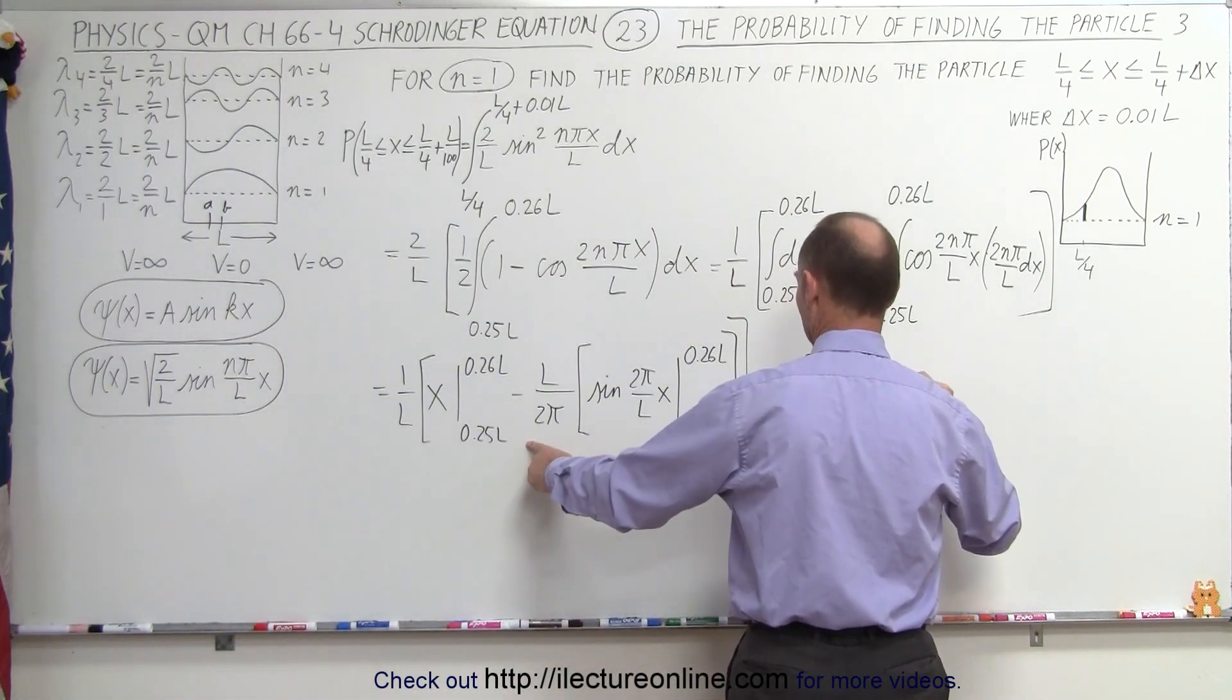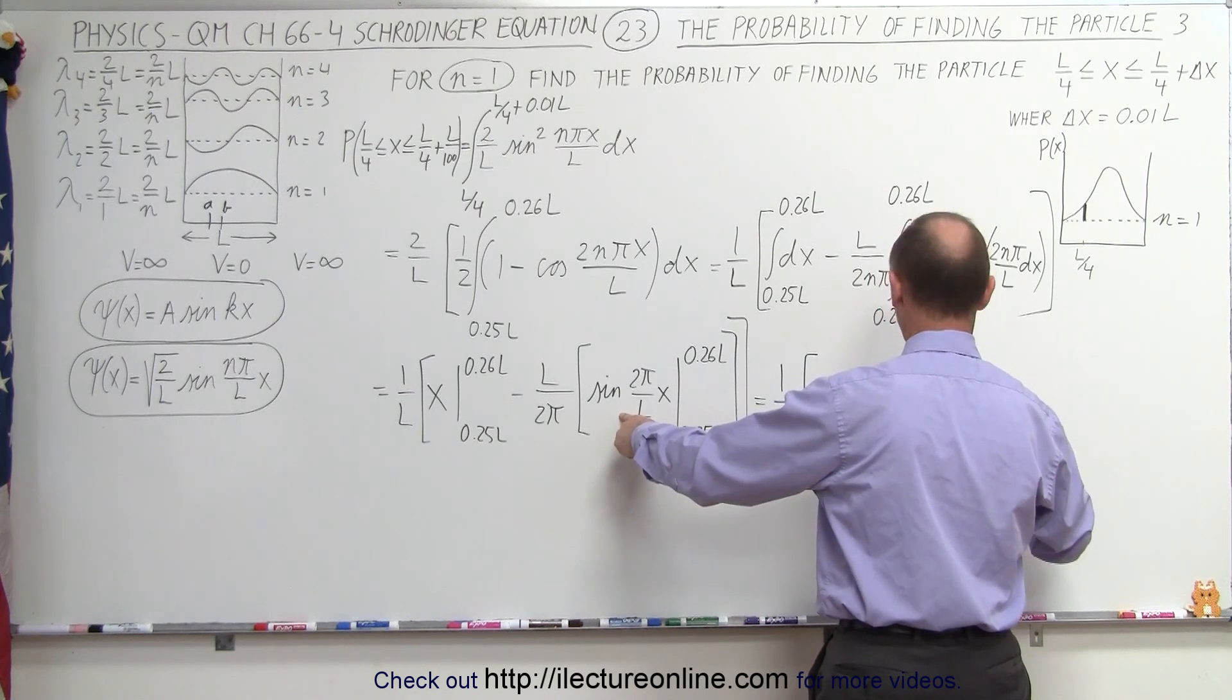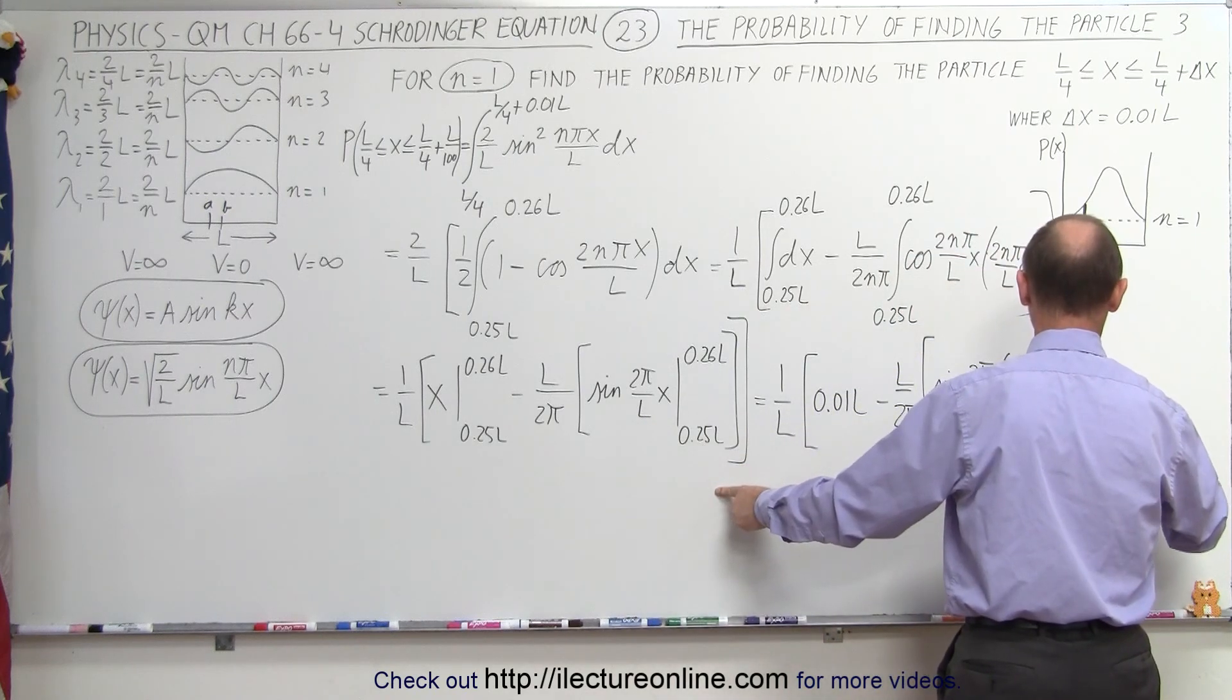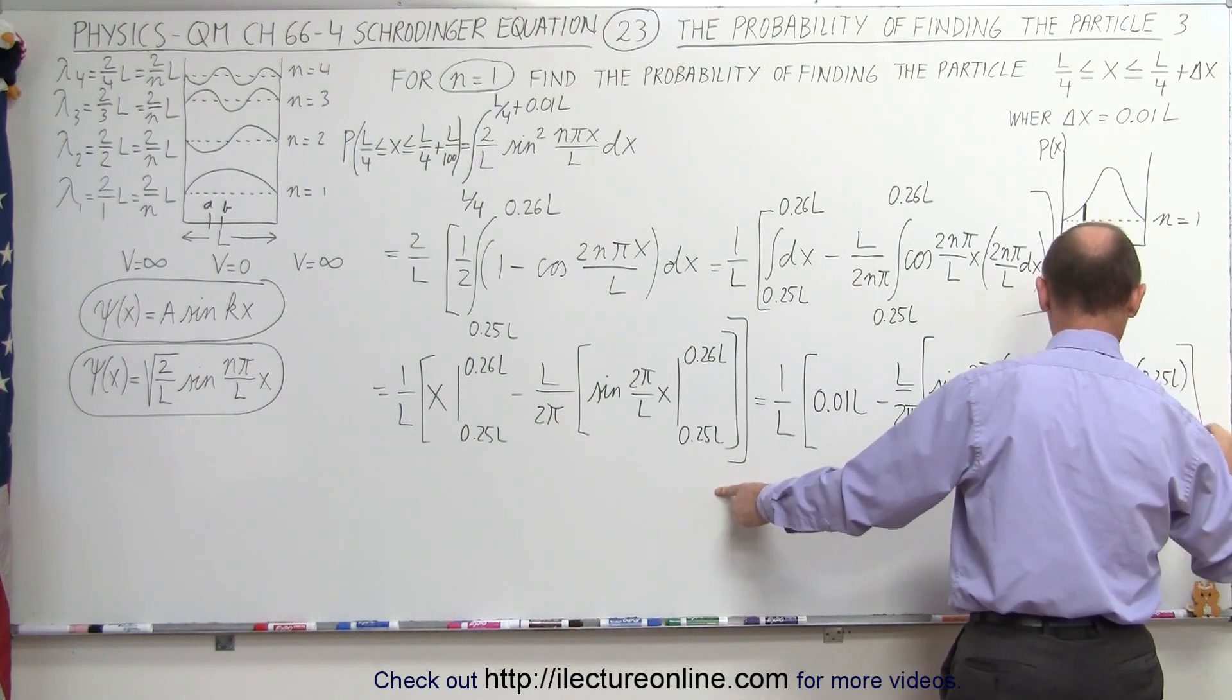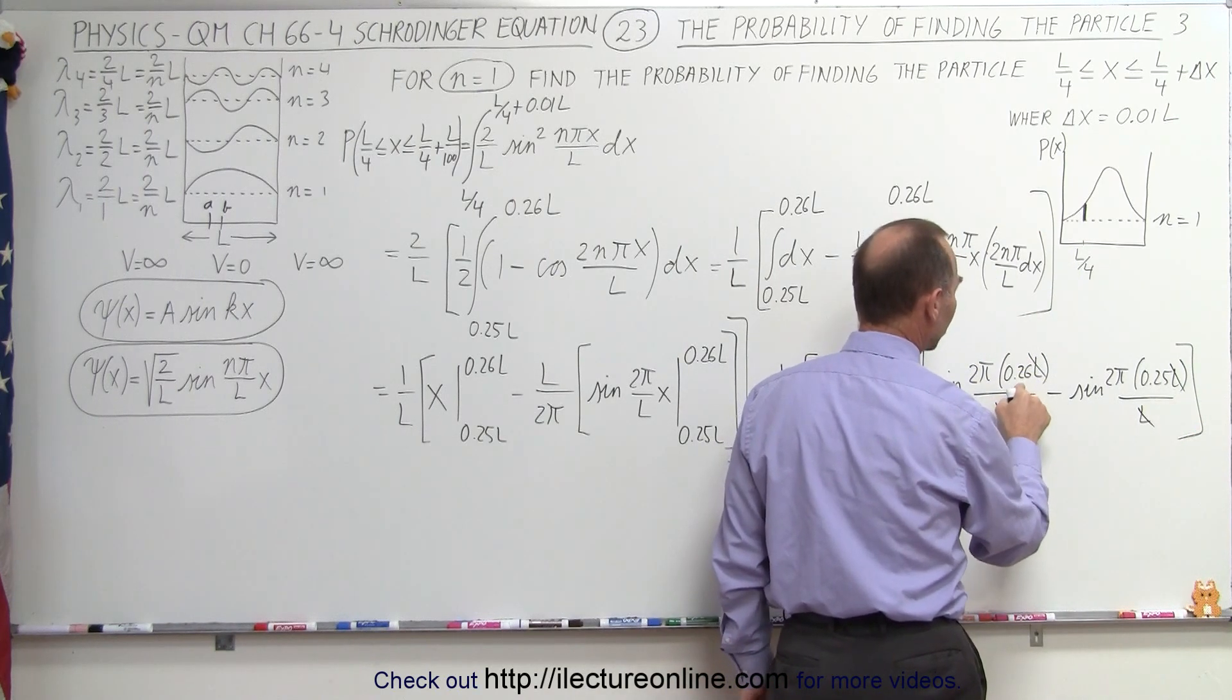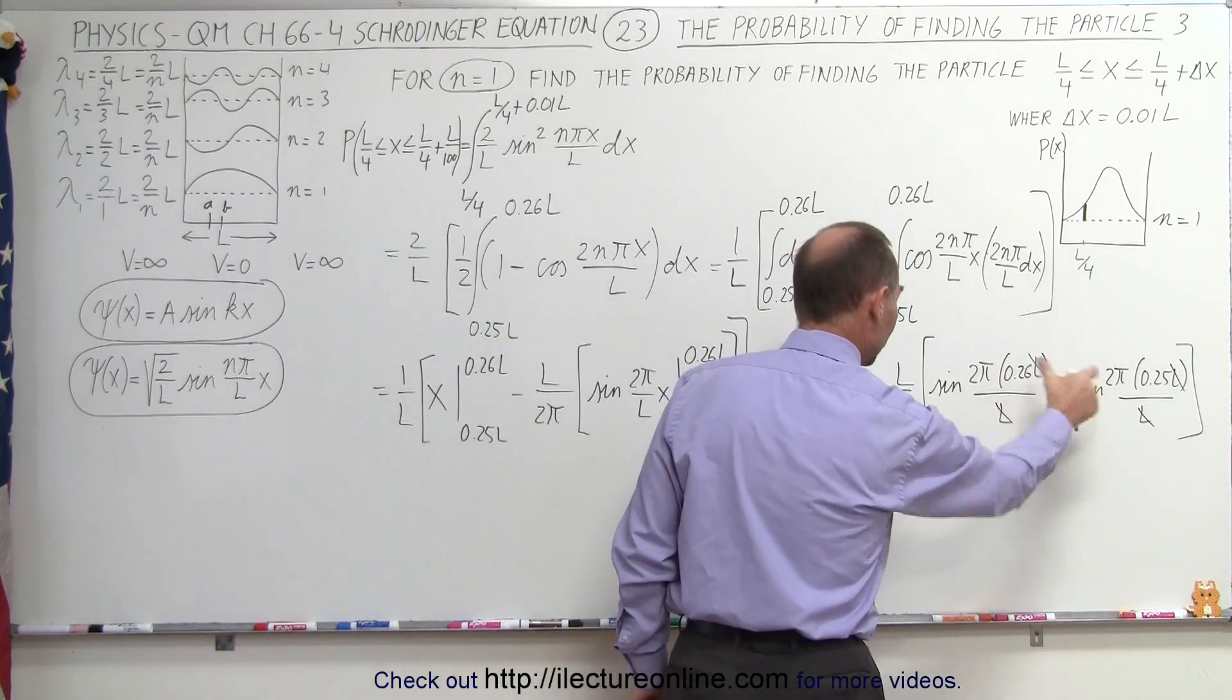And then we get minus L over 2 pi times, we plug in the upper limit, we get the sine of 2 pi times 0.26L divided by L minus, when we plug in the lower limit, we get the sine of 2 pi times 0.25L over L. And notice when we simplify that a little bit, we have the L and the L cancel, the L and the L cancel. So here we have 2 pi times 0.26 and 2 pi times 0.25. So basically, 1 over 100 of a 2 pi or 1 over 50 of a pi. And that would be the difference between the two angles.